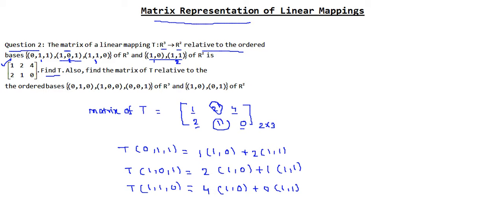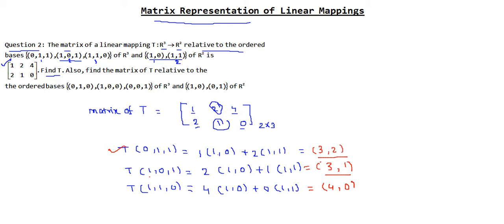After computing, we get: T(0,1,1) = (3,2), T(1,0,1) = (3,1), and T(1,1,0) = (4,0). Now what we have to find is the value of T at any point (x, y, z). For that, we are going to express (x,y,z) as a combination of the basis vectors (0,1,1), (1,0,1), and (1,1,0).